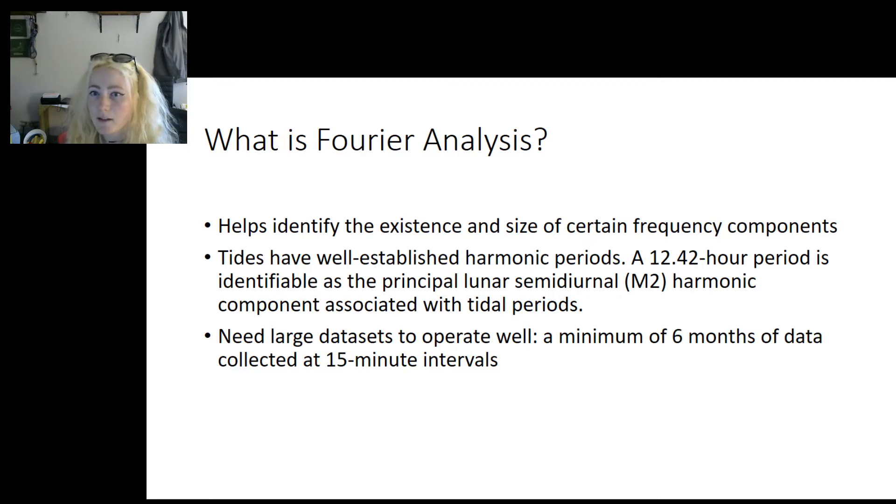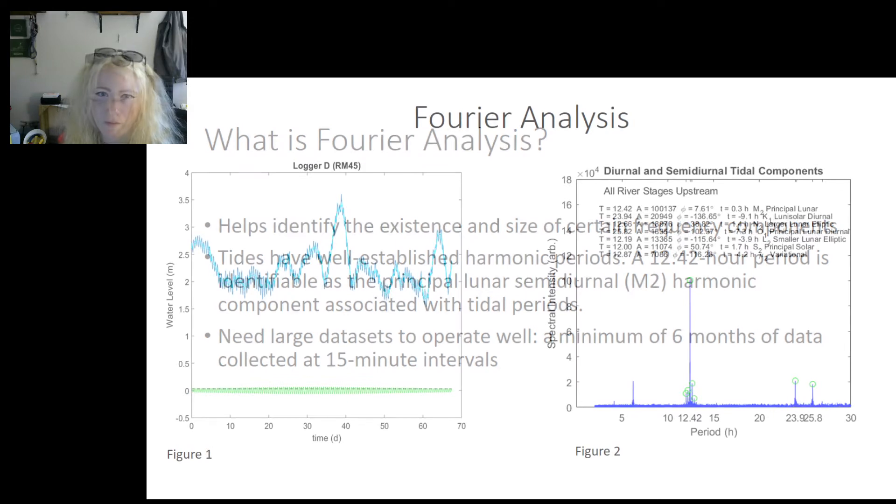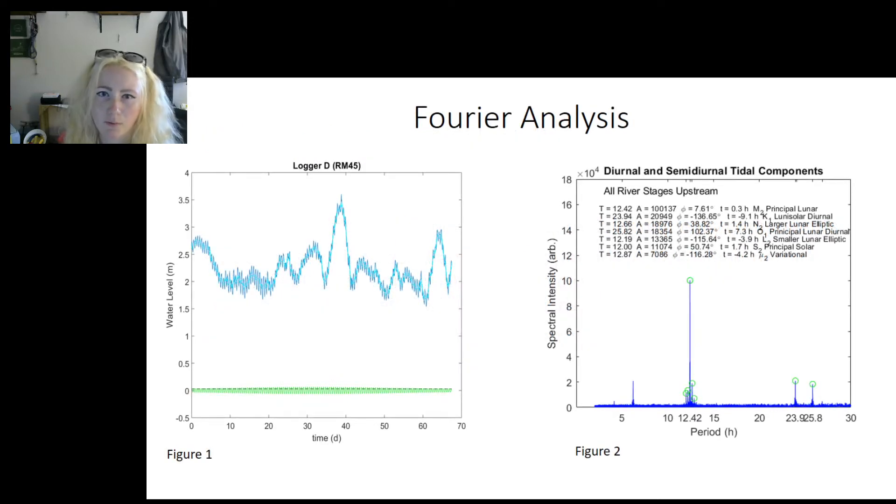However, Fourier analysis requires large data sets to operate well. A minimum of 6 months of data needs to be collected if the data was collected at 15 minute intervals. Figure 1 shows raw data and how water level changed over a period of 68 days at River Mile 45. Figure 2 shows that the principal lunar semi-diurnal component occurs at a period of 12.42 hours.